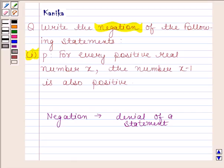For example, if the statement is 'New Delhi is a city,' then negation of this statement will be 'New Delhi is not a city,' or 'it is false that New Delhi is a city,' or we can say that 'it is not the case that New Delhi is a city.'